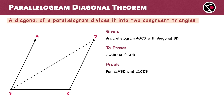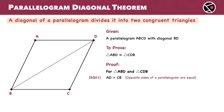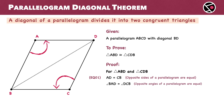First, we know that opposite sides of a parallelogram are equal. So, AD equals CB. This is equation 1. Next, we use another important property of parallelograms: opposite angles in a parallelogram are equal. This means angle BAD equals angle DCB. This is equation 2.